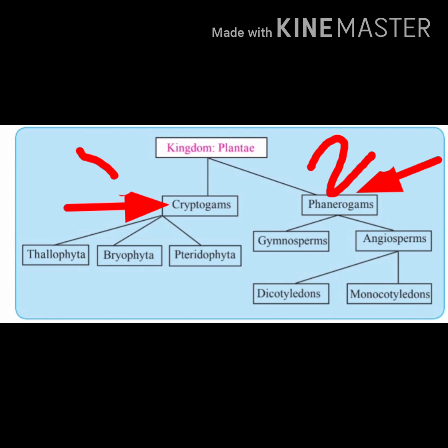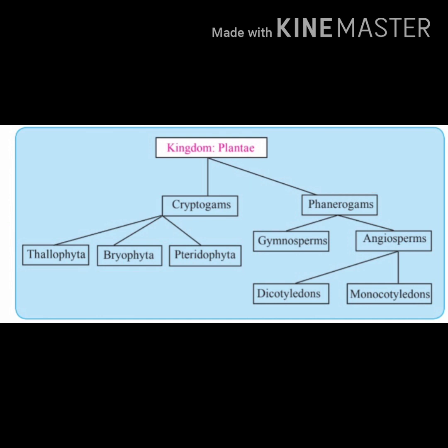Cryptogams are plants where the reproductive organs are hidden. Crypto meaning hidden and gams meaning reproductive organs, so cryptogams have hidden reproductive organs. Phanerogams are flowering plants and they have special structures for reproduction and producing seeds.